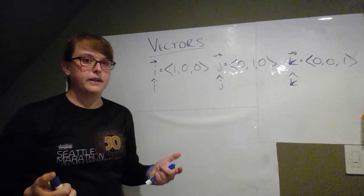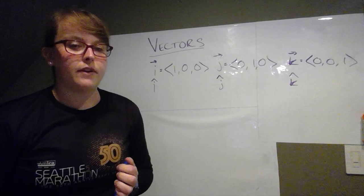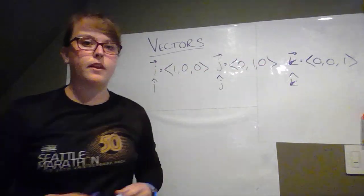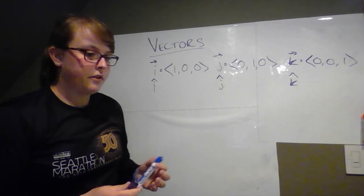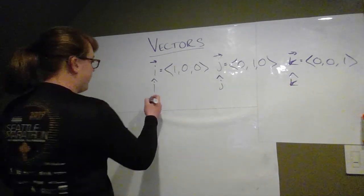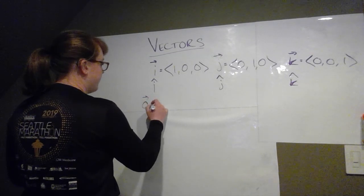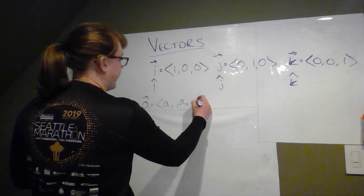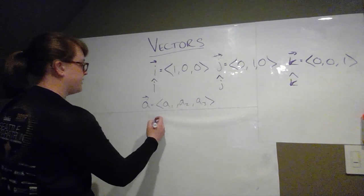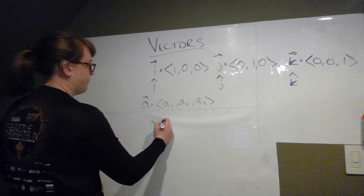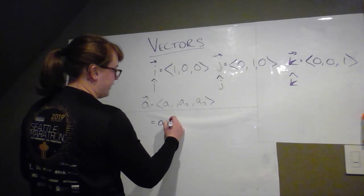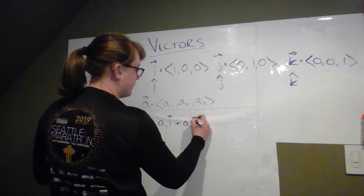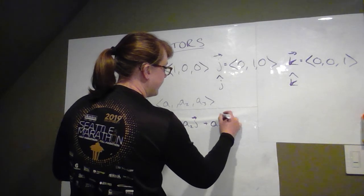And they're the standard basis vectors because you can write any other vector in terms of a sum of these vectors. So for example, if you had a vector a that was a1, a2, a3, you could rewrite this as a1i plus a2j plus a3k.